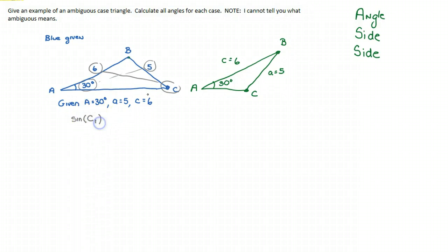We set this up and say sin C₁ over 6 equals sin 30° over 5. So we get sin C₁ equals 6 sin 30° over 5. Sin of 30 is one half, so one half times six is three. We have three over five, and now I can take sin inverse of three over five.